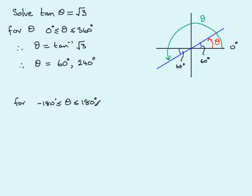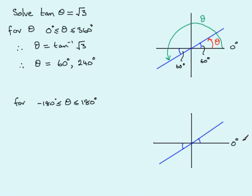We draw the quadrant diagram again. Tan is positive in the first and third quadrants, so we mark the two equal angles to the horizontal. Starting at 0°, I turn to the first blue line — that's within the range — and mark it in. If I turned all the way around to 90°, then 180°, then further to the third quadrant, that angle would be more than 180°, so it would be out of range.